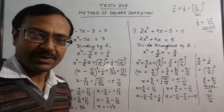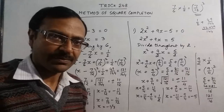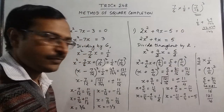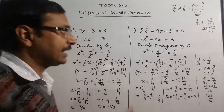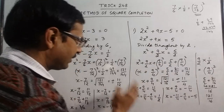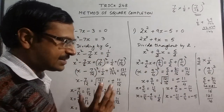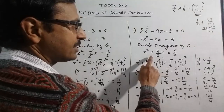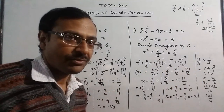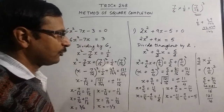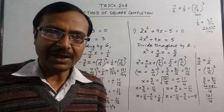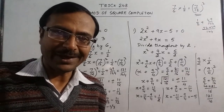And this completes our method of square completion — a very important method for board examinations. Through just 10 minutes of practice with 5 or 6 questions of this type, you can easily get used to these steps. Remember the third step, where we add a term on both sides — this is very important. For more videos important for board examinations, keep watching the channel and subscribe if you like it.